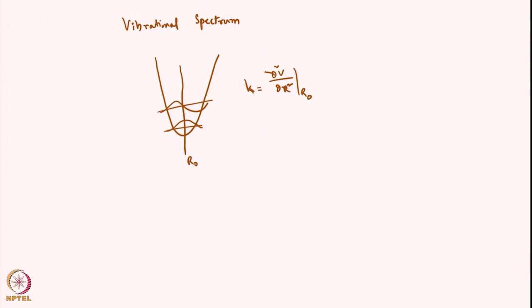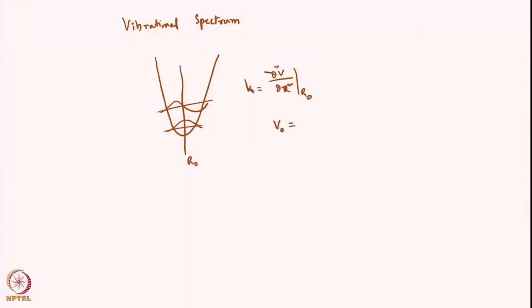When you have a harmonic potential, the harmonic oscillator has only one frequency — the fundamental frequency v0 — given by 1 over 2π times the square root of k over μ. So if I can measure v0, I will be able to get the force constant.